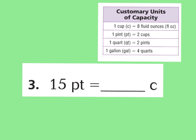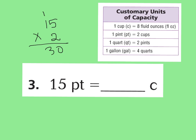Let's look at question number 3. It says 15 pints will equal how many cups. Looking at our chart, 1 pint is equal to 2 cups. Pints are bigger than cups, so if you're converting to cups you're going to have more of them, which means we're going to multiply. So 15 times 2 equals 30 cups, which is the same value as 15 pints.